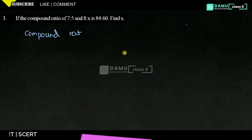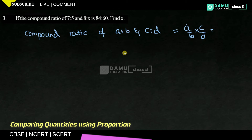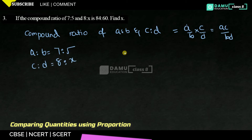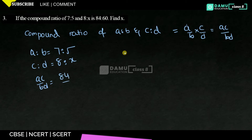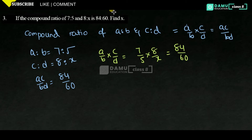Compound ratio of A is to B and C is to D equals A by B into C by D, which is the product of antecedents by product of consequents. Let A is to B equal 7 is to 5, and C is to D equal 8 is to X. Then AC by BD equals 84 by 60. So A by B into C by D equals 7 by 5 into 8 by X, which equals 84 by 60.